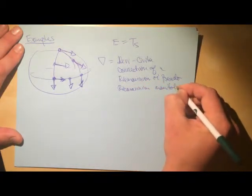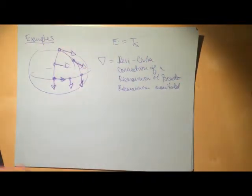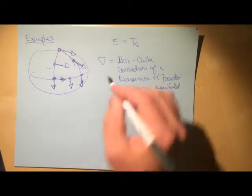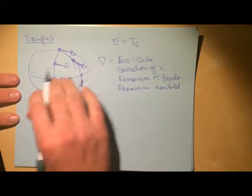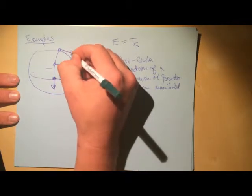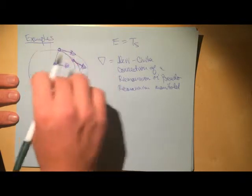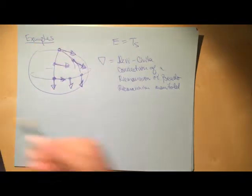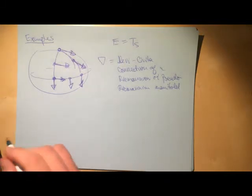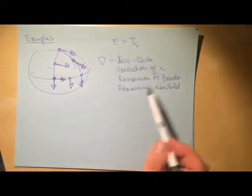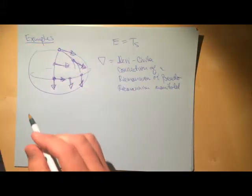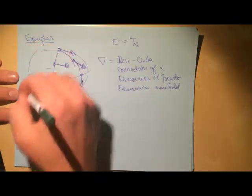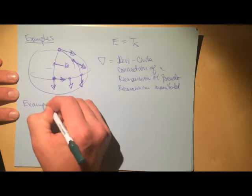Here's a cartoon: take a sphere and a vector on it. We can move it around via parallel transport. When you transport it around a loop and return, you find the space is curved. The Levi-Civita connection for any Riemannian manifold allows us to talk about curvature of the manifold, which connects to studying general relativity and spacetime.